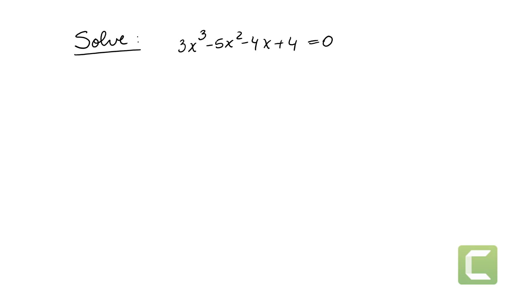Let's solve the equation 3x cubed minus 5x squared minus 4x plus 4 equals 0. When factoring doesn't work, we'll have to come up with another method, and one of those methods is this.